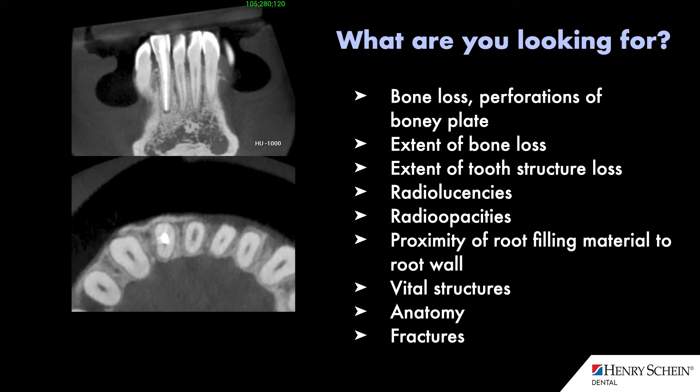Then when we decide we may need a CBCT, especially if there are certain things we cannot evaluate with the 2D radiograph — such as issues with the root canal filling itself, or we're trying to look for any missed canals we may suspect — we also want to look at associated bone loss, tooth structure loss, and any lesions. The CBCT is also really great for giving us better details about vital structures, the full extent of bone loss, whether it extends to vital structures, bony perforations of the alveolar plate, or if it extends to other teeth.